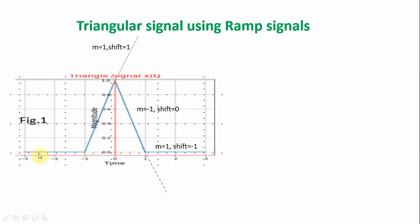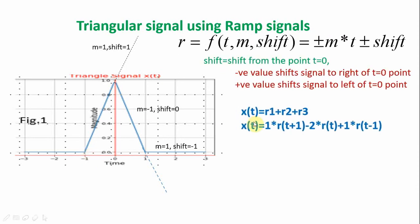For t less than minus 1 it is 0, so we will not have to worry about it. A ramp has to start at t equal to minus 1 with slope equal to 1. From minus 1 to 0 there is an increase in time of 1 unit and the magnitude changes by 1 unit. This is a ramp segment with slope 1 and shift equal to plus 1, indicating it is to the left of the t equal to 0 axis. So we have ramp signal r1, which is equal to r of t plus 1.